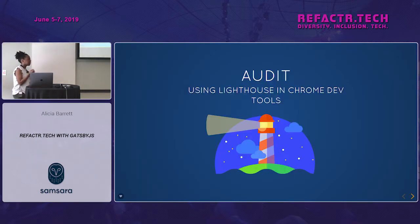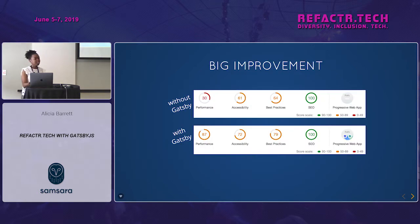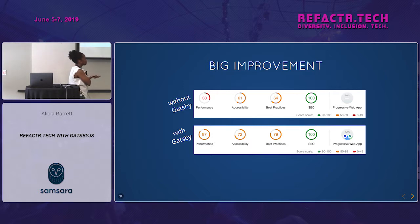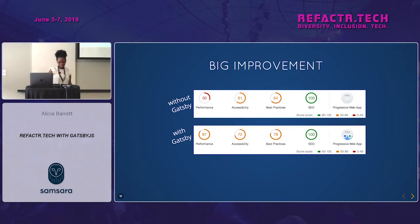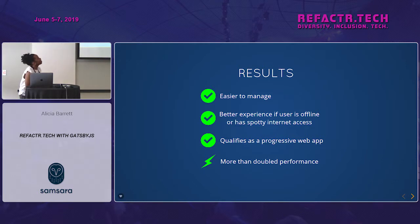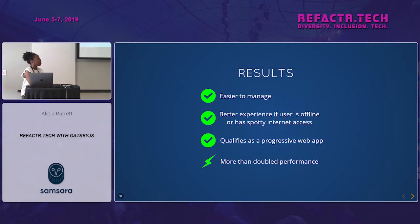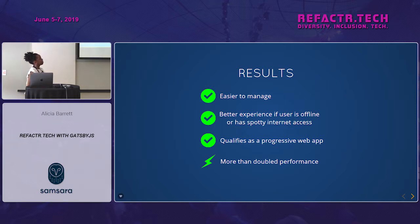Now that we've taken advantage of Gatsby's powers, let's do another Lighthouse audit. We see a pretty big improvement: we've drastically improved performance, accessibility is better, best practices are better, SEO is better, and we are now qualified as a progressive web app. This is huge. The project is now easier to manage, users get a better offline experience, and we've more than doubled the site's performance.